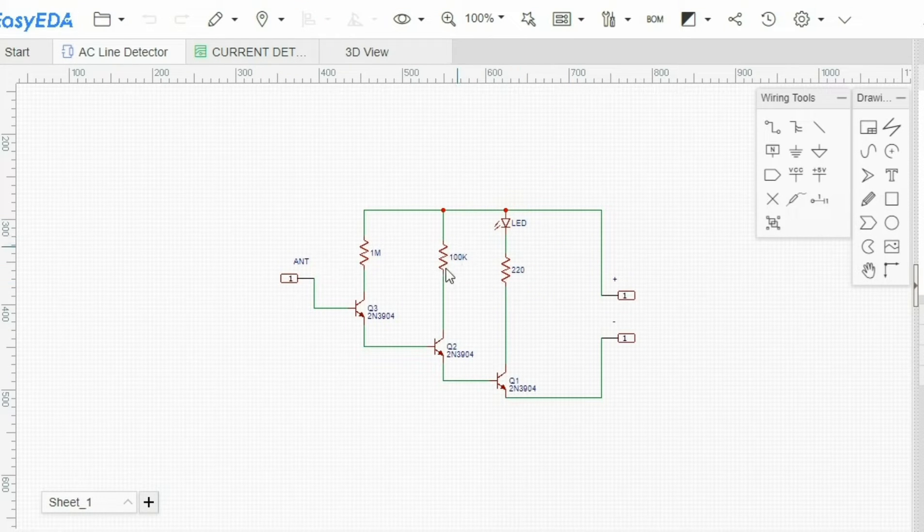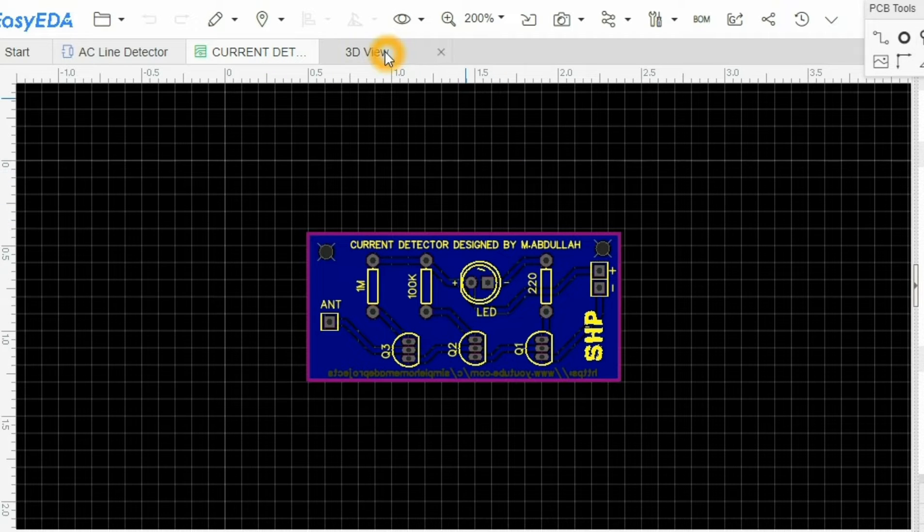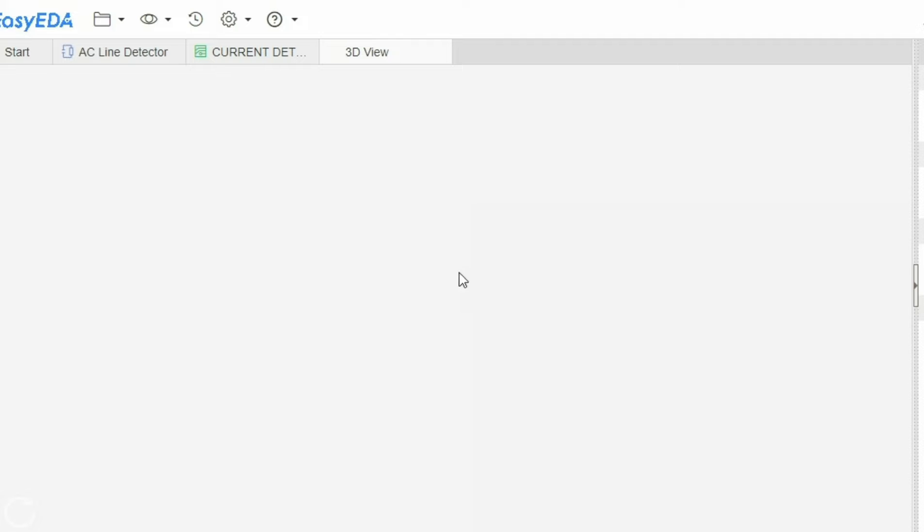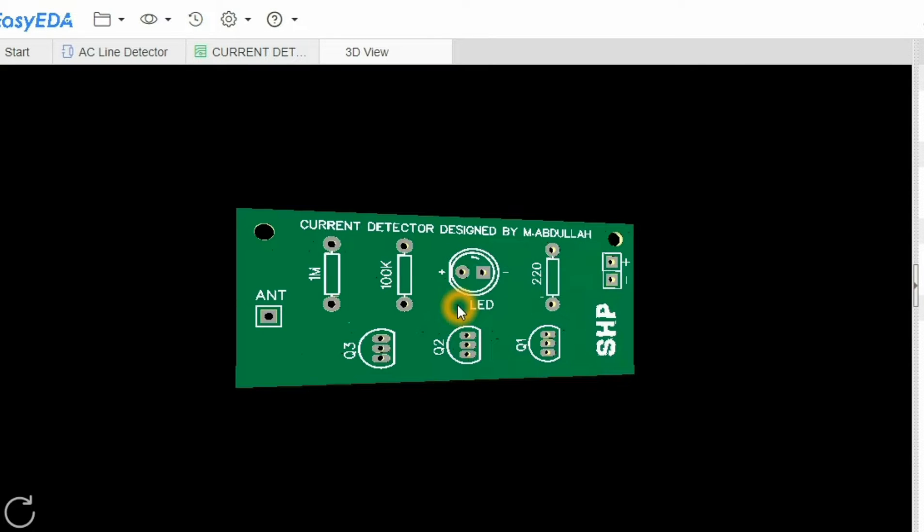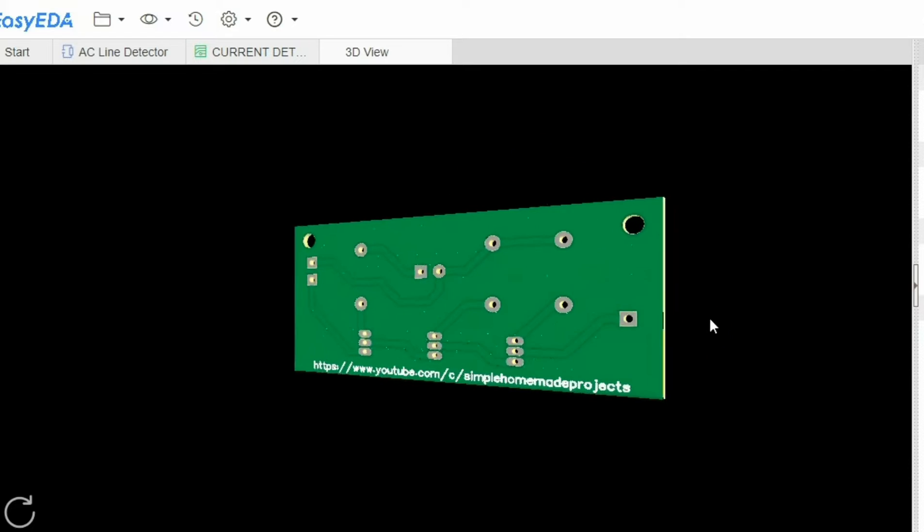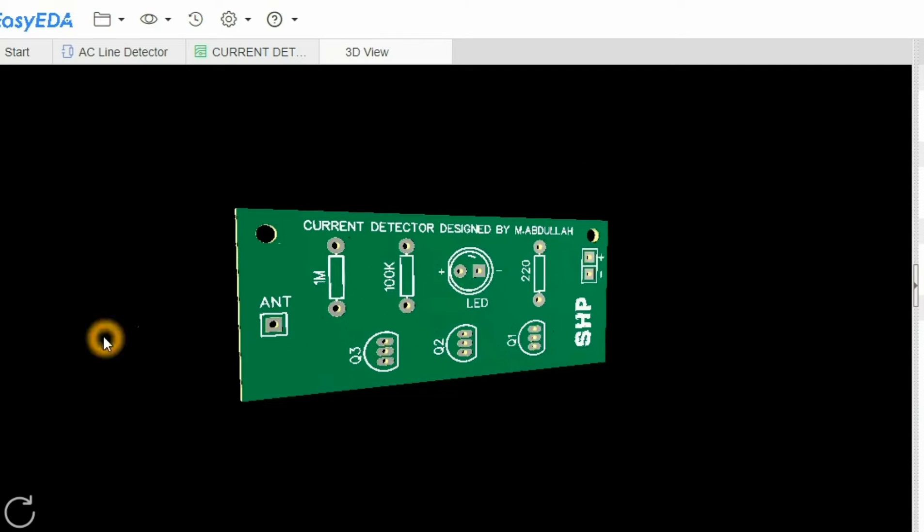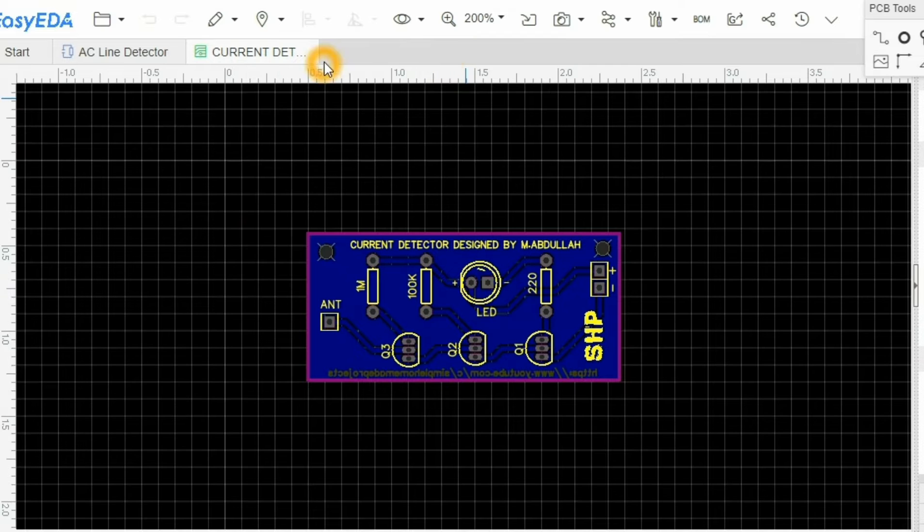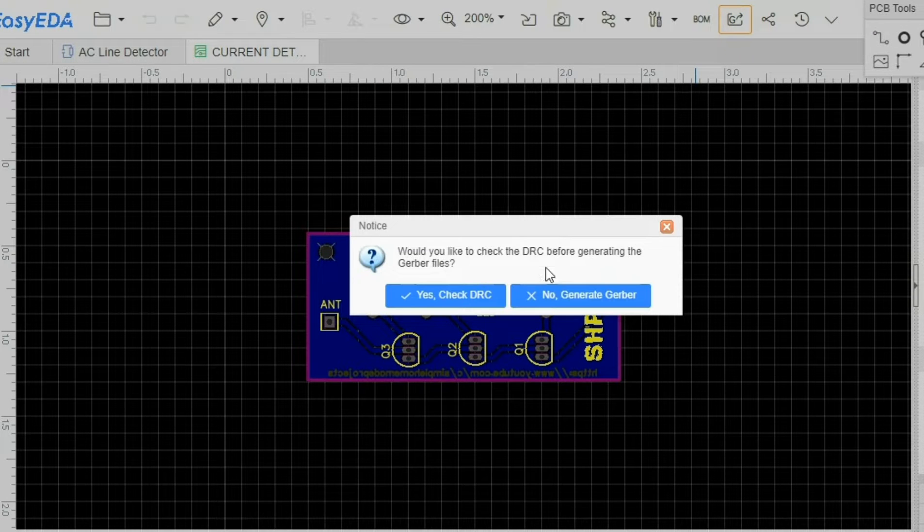And here friends I have designed the circuit diagram in EasyEDA and I have also made the PCB. Here you can see the 3D view of our PCB. And after checking all the connections, I uploaded these Gerber files to the JLCPCB website and then I ordered them from JLCPCB.